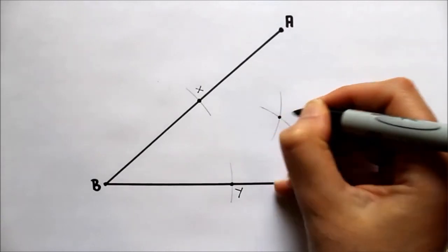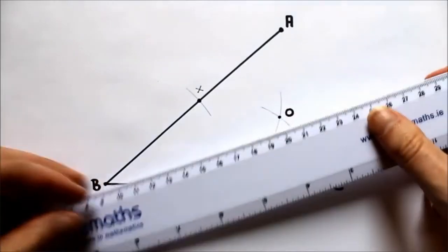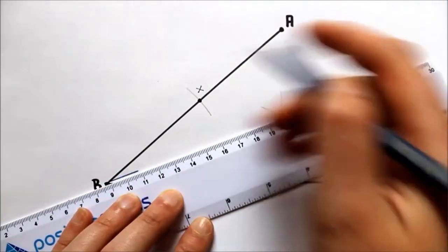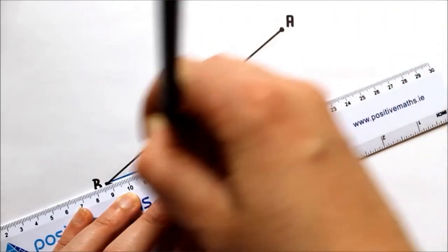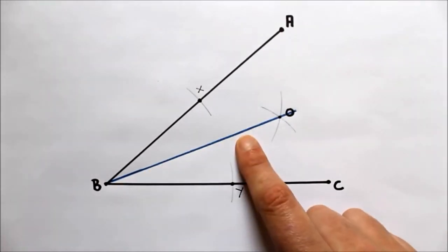I'm just going to mark the point of intersection of those two arcs, I call it point O. And using my straight edge, I'm going to join B and O. So the line BO is the bisector of the angle ABC.